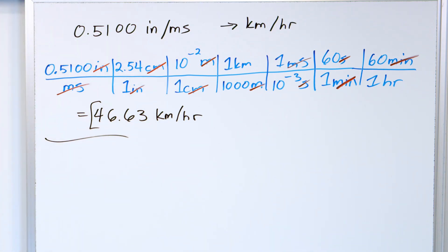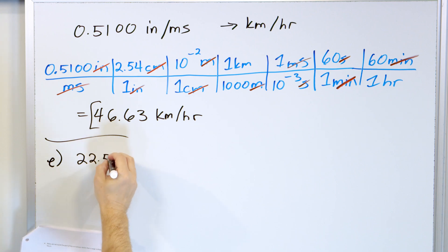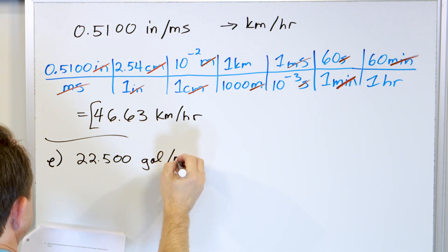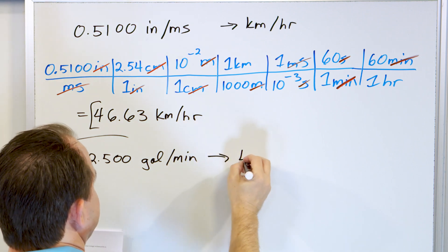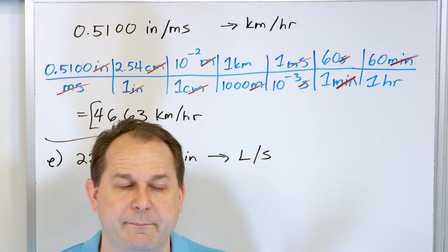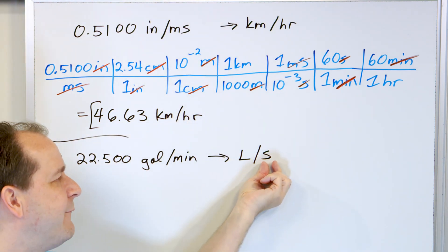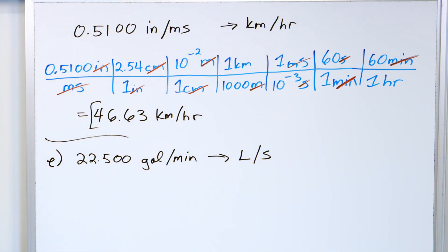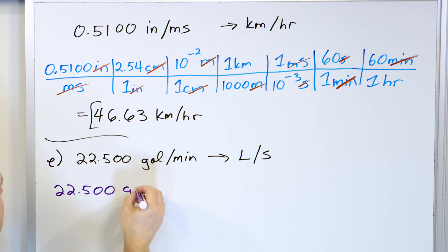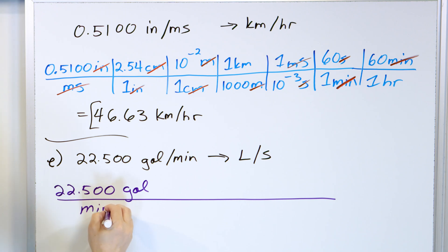That was quite a mouthful. Next problem, part E: let's convert 22.500 gallons per minute into liters per second. This is like a pump — how fast does it pump in gallons per minute? I want to convert it to liters per second. I write 22.500 gallons on top and minutes on the bottom.